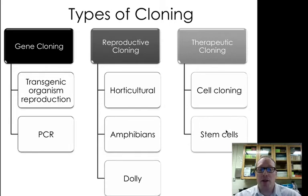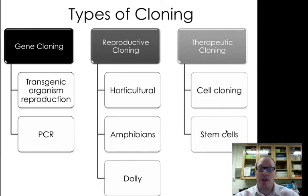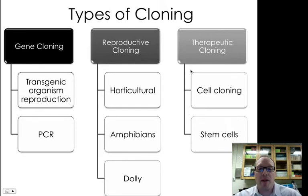Gene cloning, which is just making more copies of a particular gene. Reproductive cloning, which is making genetically identical copies of an entire new organism. And then therapeutic cloning, which is cloning for the purpose of trying to improve the health of some sort of patient — that is therapy.